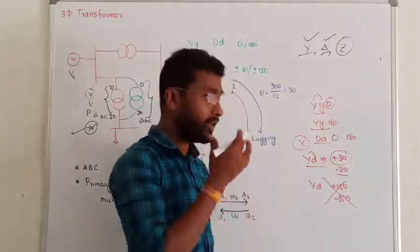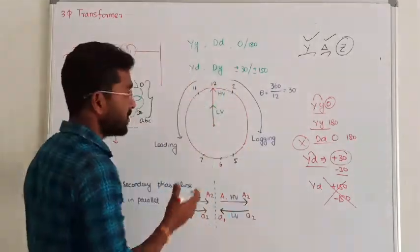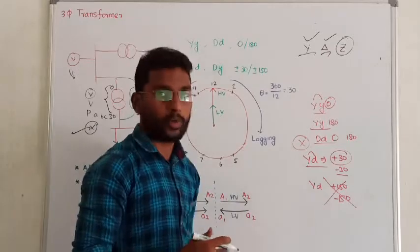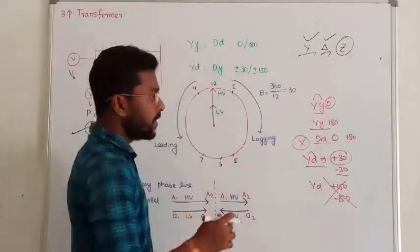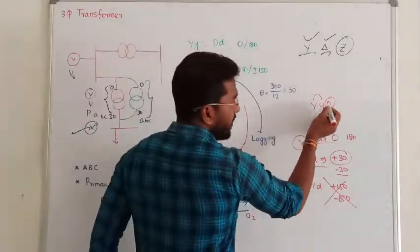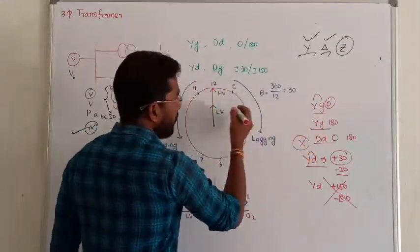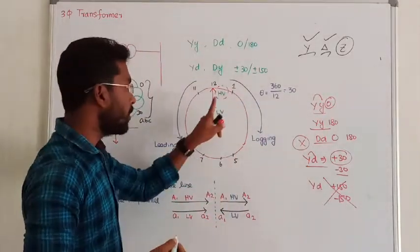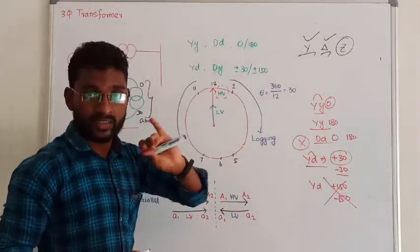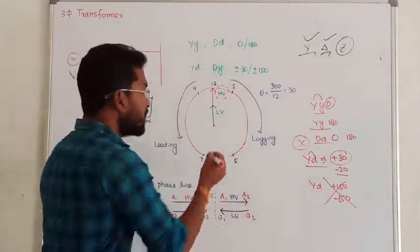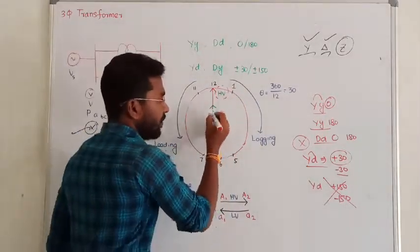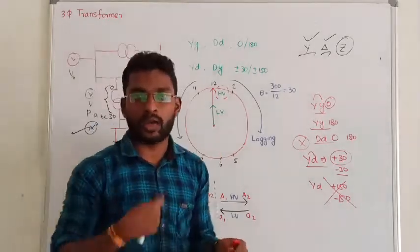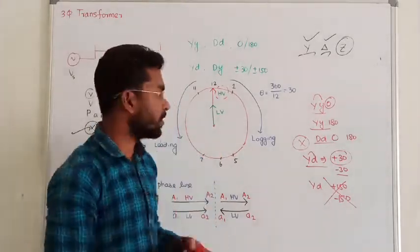Now, if we represent the windings, primary is always HV — we design it with capital letters. Secondary is always LV — represented with small letters. So HV is capitals and LV is small letters. We are going to use the clock notation to represent the phase displacement.